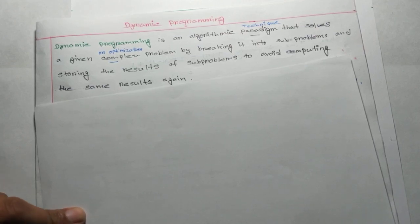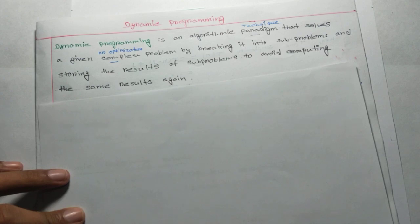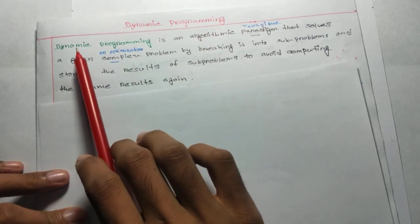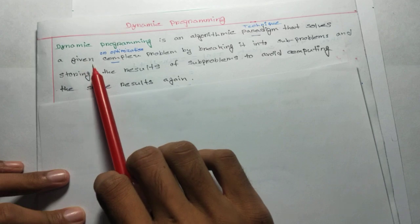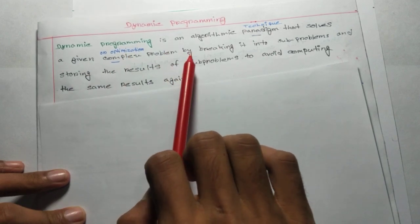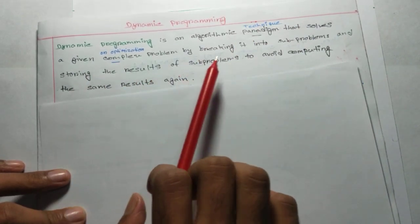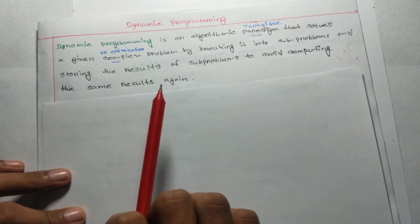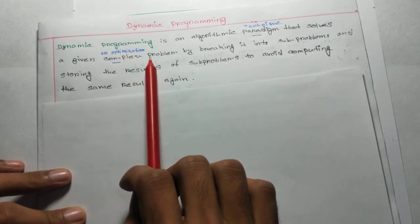Hello friends, welcome to my new lecture video. I am Muhammad Tarukhishlam. In this lecture video I am going to discuss about dynamic programming. Dynamic programming is an algorithmic technique that solves a given complex or optimization problem by breaking it into subproblems and storing the result of subproblems to avoid computing the same result again.